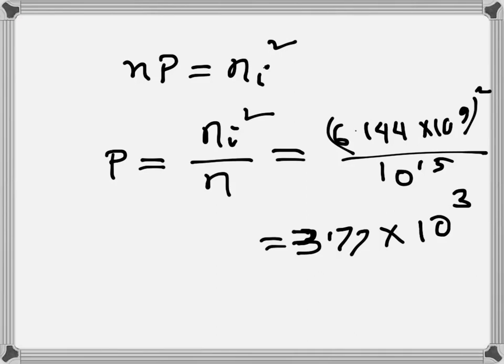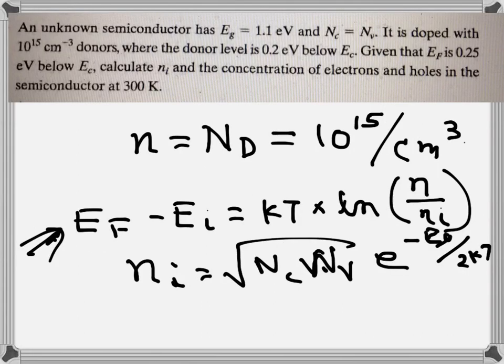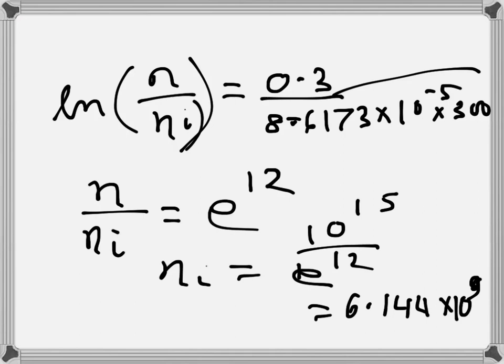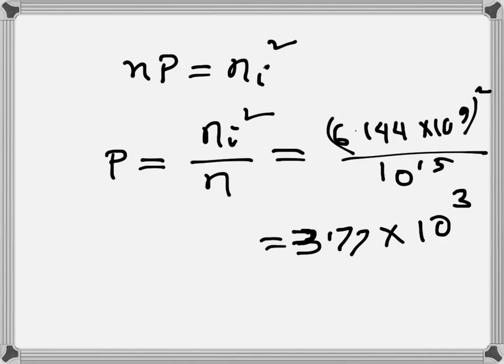So we can see this is the hole concentration. Electron concentration is, we have assumed full ionization, that's why N is equal to ND. Hole concentration is 3.77 into 10 to the power 4 per centimeter cubed, so much less than electron concentration and also less than NI as expected because this is an N-type semiconductor.